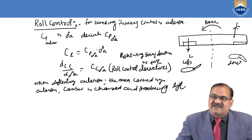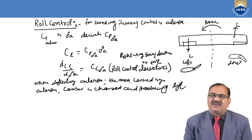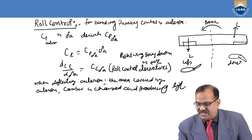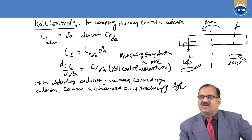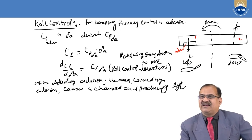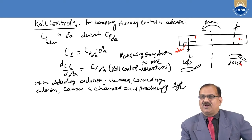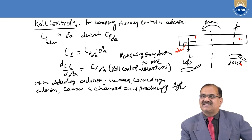Now I am going to discuss about the rolling control. We know that there are ailerons. Ailerons are fixed at the trailing edge of the wing tips. Here we have aileron one and here we have aileron two. If you make aileron two down, lift will be more on that side, and the other aileron is going up so lift will be less there. Your banking will be from right to left.